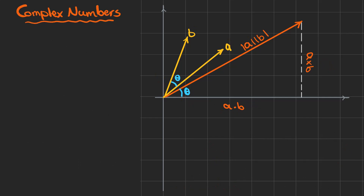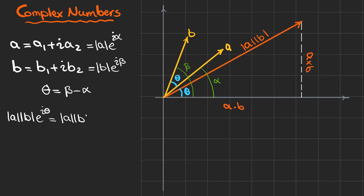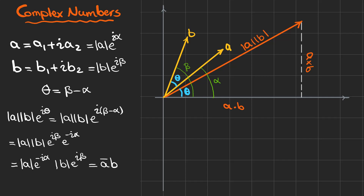Now let's get to the complex plane. We can write a as a1 + i·a2 and b as b1 + i·b2. In polar form, a is |a|·e^(i·alpha) and b is |b|·e^(i·beta). As you can see in the picture, theta is beta minus alpha, and we can write the orange complex number as |a|·|b|·e^(i·theta). Since theta = beta − alpha, we can write this as |a|·e^(−i·alpha) times |b|·e^(i·beta), which is ā·b.